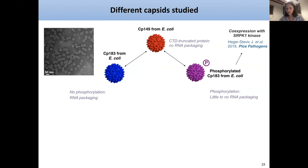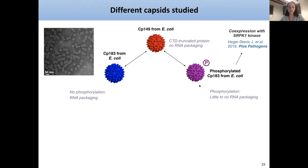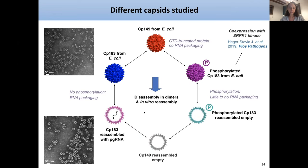We also studied different capsid types using the E. coli bacterial expression system for higher yields. We produced the truncated protein, the full-length protein, and the phosphorylated protein using co-expression with a kinase — a plasmid developed by our collaborators in Freiburg — which phosphorylates seven sites in the C-terminal domain. We compared samples with and without RNA, since when it's phosphorylated it no longer packages RNA. We can disassemble all these capsids using guanidine or urea to get the dimer, then reassemble them as empty capsids or filled capsids with the pre-genomic RNA.